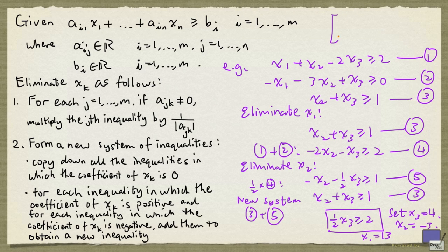And so x1, x2, x3 equals 13 minus 3, 4 is one solution to this system.